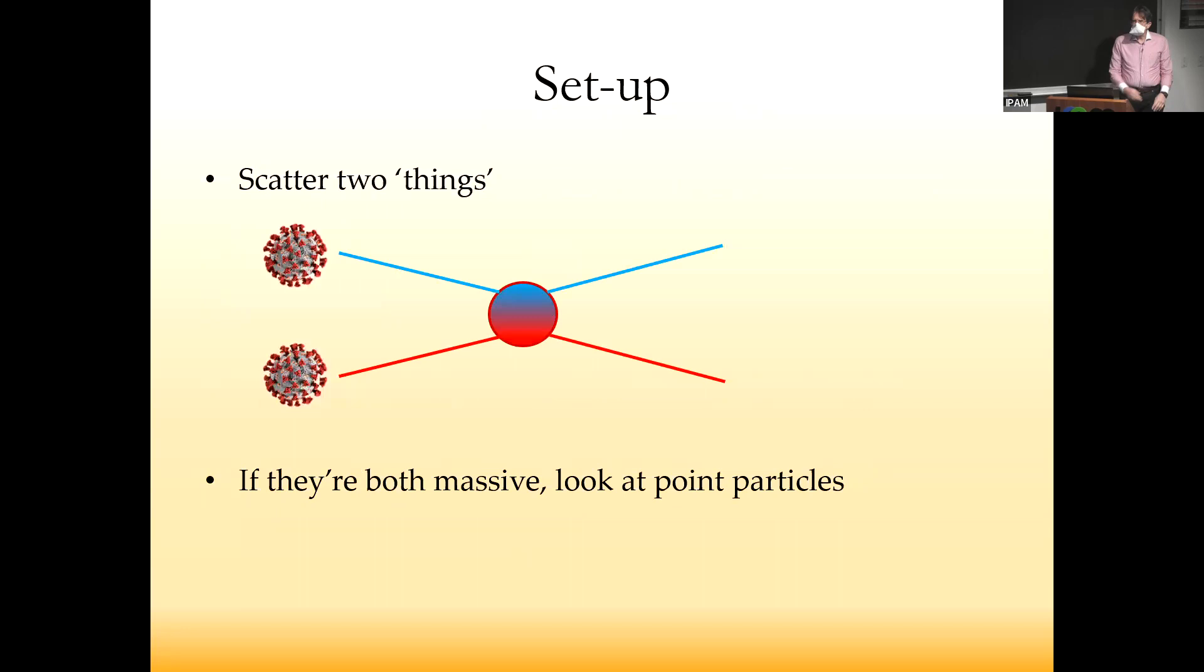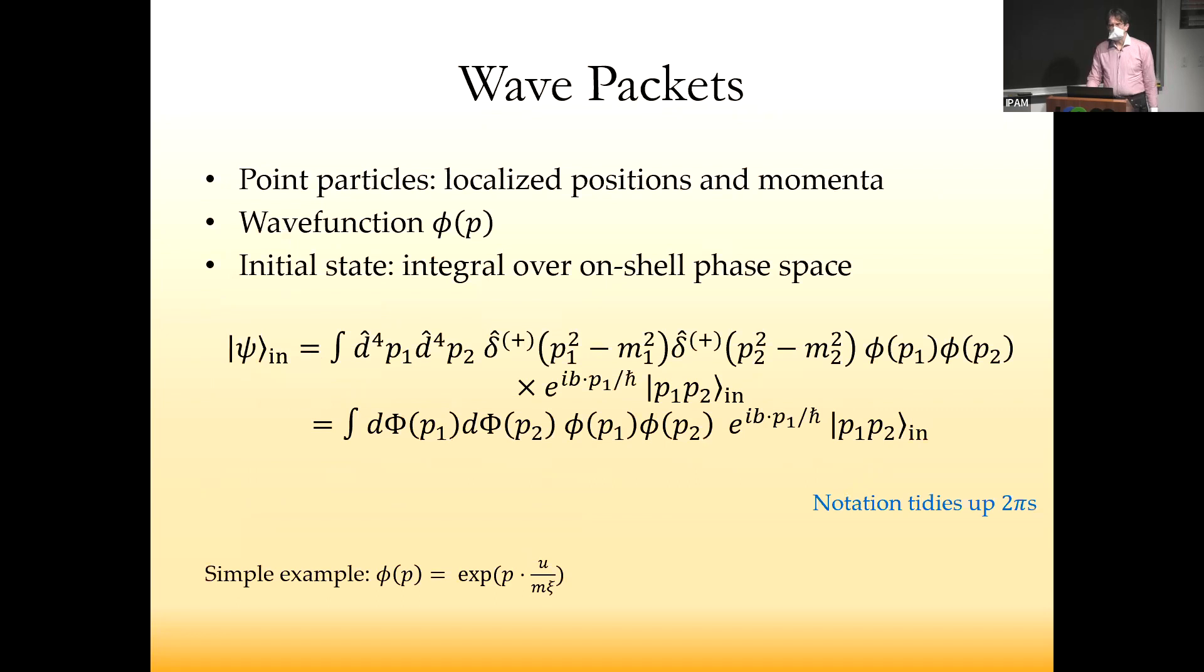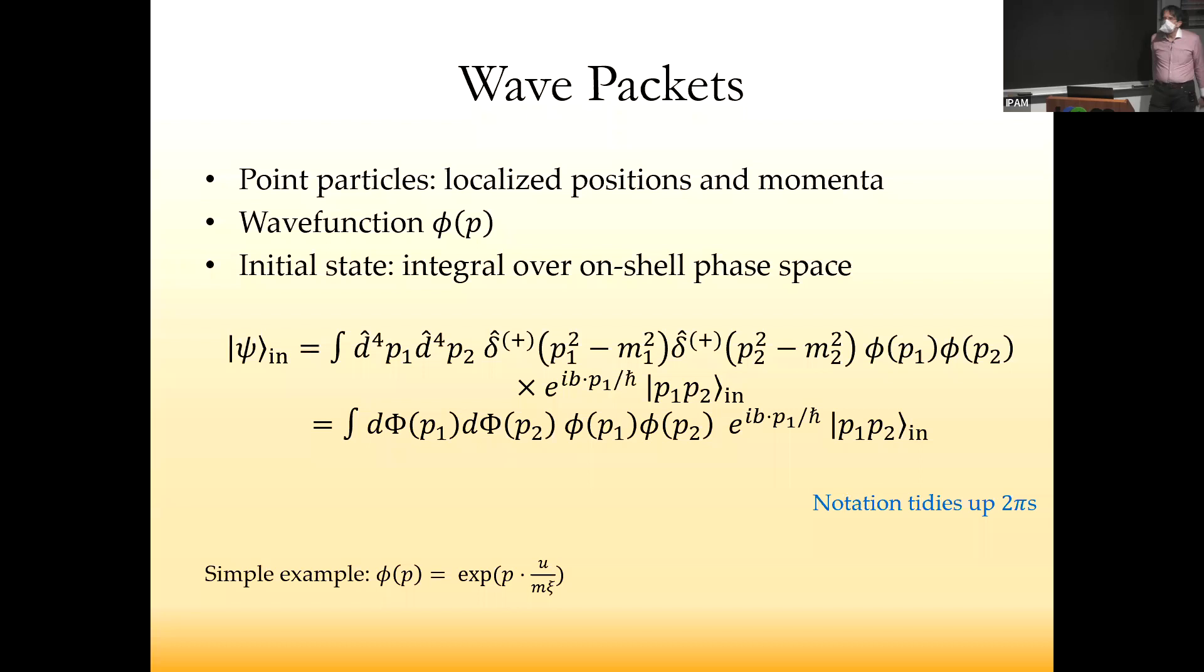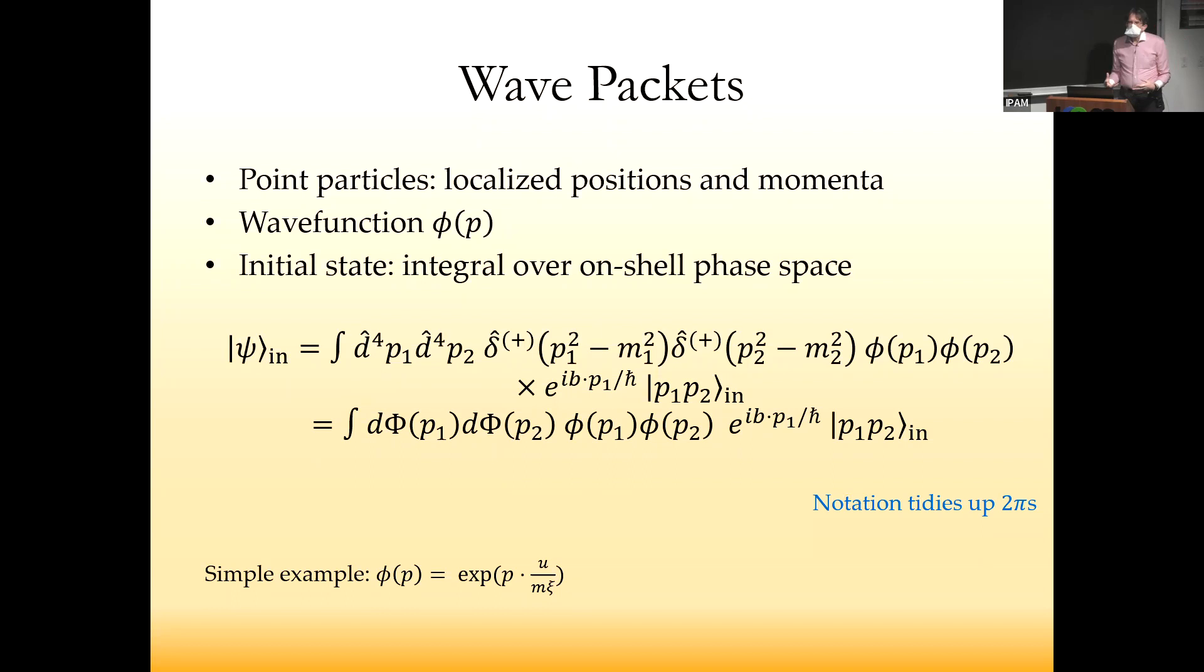We scatter two things. If they're both massive, we're looking at point particles. This is essentially a review. We build wave packets to localize positions and momenta. We're not going to look inside them, although that will be interesting in the future. We start with plane wave states but build wave functions on top of them.